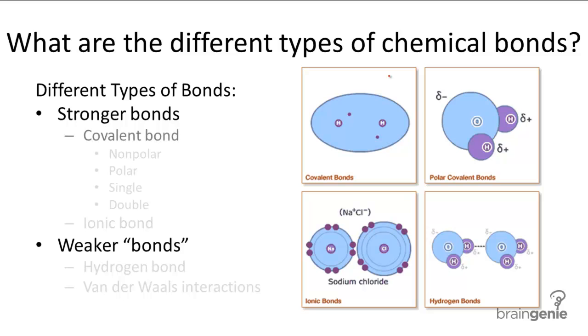First let's look at covalent bonds. A covalent bond occurs between two atoms that share a pair of electrons. So in this picture, these two hydrogens share these two electrons.